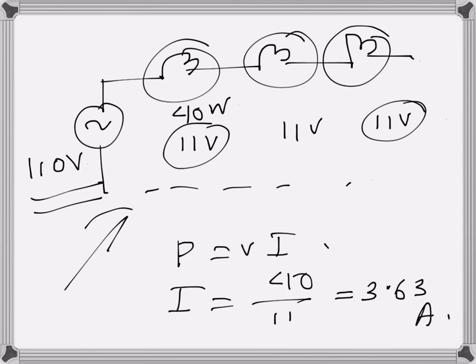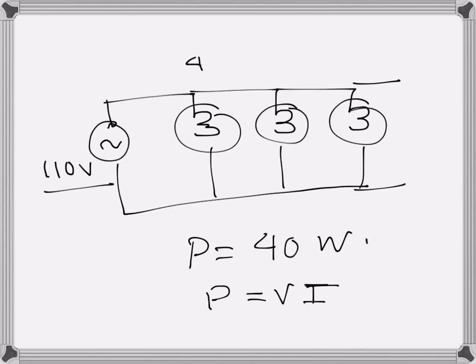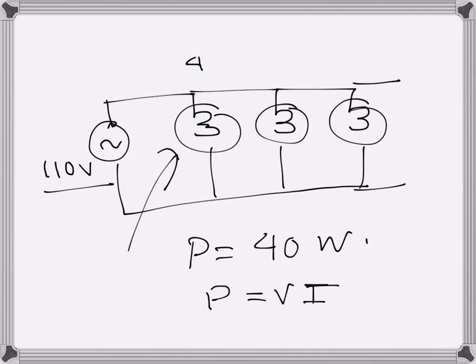So the ideal connection situation is the parallel connection. Each of the bulbs - we are assuming the bulbs rating is 110 volts because they have the supply voltage rating - so each of the bulbs will have 110 volts in this connection when they are connected in parallel, and they will all be lit as 40-watt bulbs.